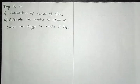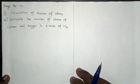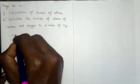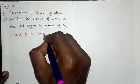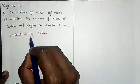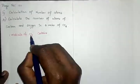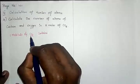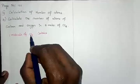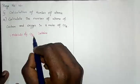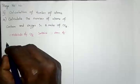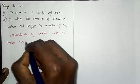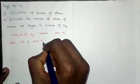The basic idea behind this problem is very simple. One molecule of carbon dioxide — CO₂ — contains one carbon atom and two oxygen atoms. So one molecule of carbon dioxide is made up of one atom of carbon and two atoms of oxygen.